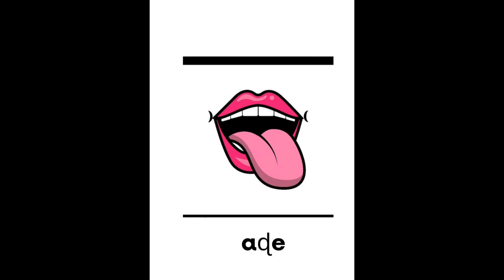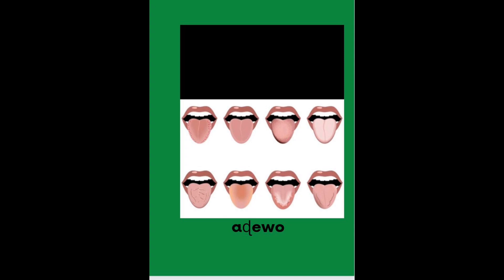Adela — adela. Well done! Now let's review old syllables: da, do, do, do, de.